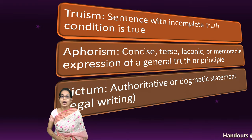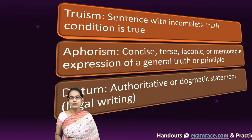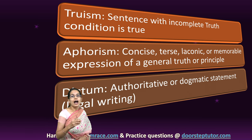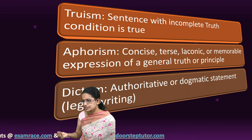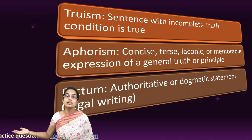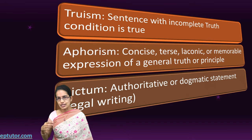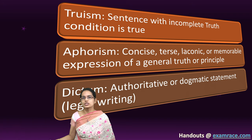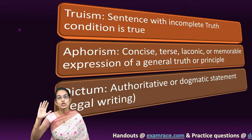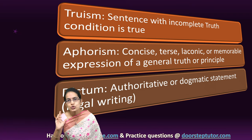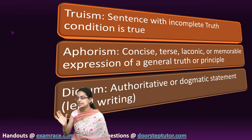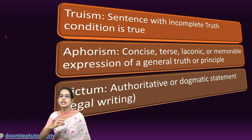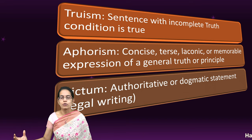Let's begin with the very first one, which is truism. It is a sentence with incomplete truth condition and it's true. Let's say I put in a simple statement: under appropriate conditions, sun rises. I'm saying that sun rises but under appropriate conditions — I do not know what those conditions are, but still I say this is a true statement. Truism is a sentence with incomplete truth, under certain or appropriate conditions.